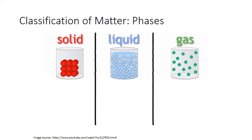The first classification system we'll look at focuses on the phase or state of matter. And there are four phases of matter. The three represented here are the three that we deal with most commonly here on Earth: solid, liquid, and gas.